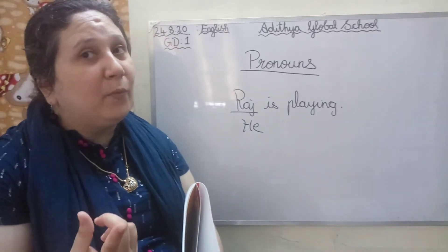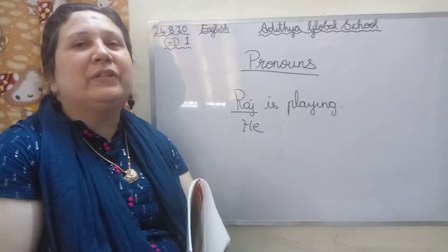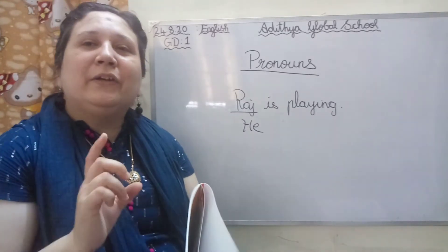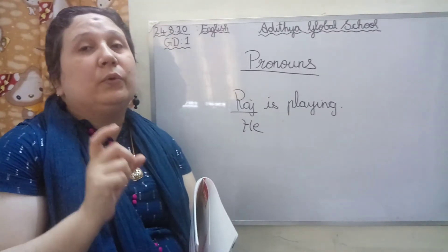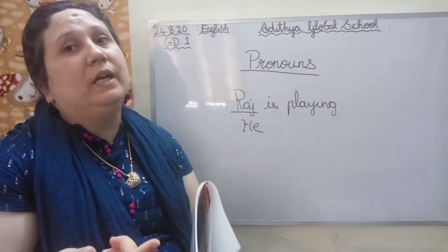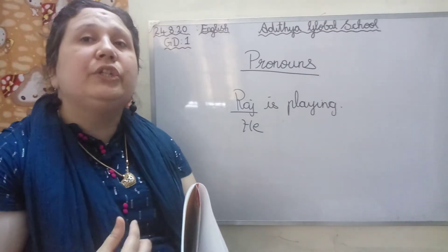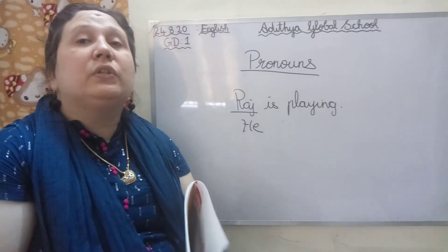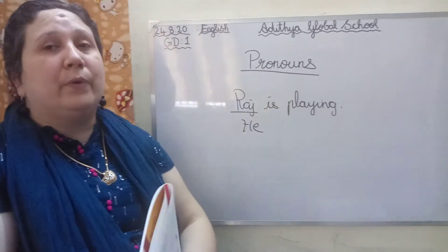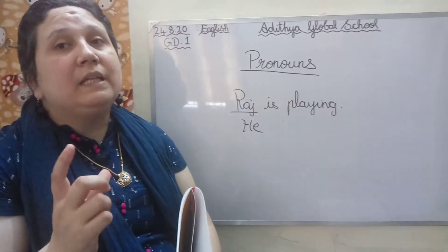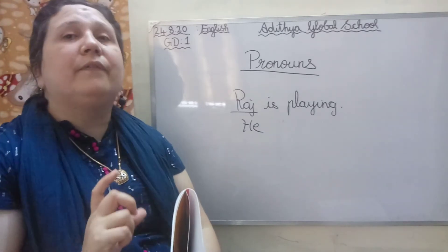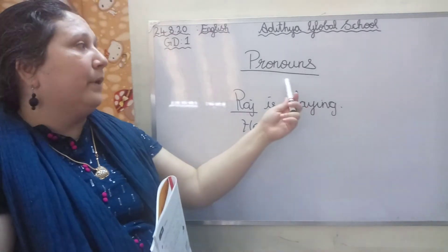Now Sharin is a girl or a boy? Very good. So I am a girl. So I use she. So instead of the naming word Sharin, I use she. So these things are called pronouns. The place where we use words instead of naming words are called pronouns.